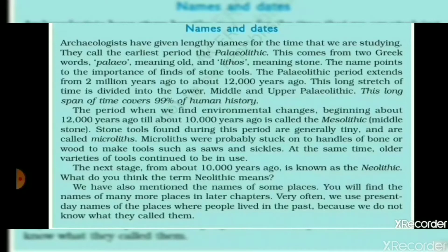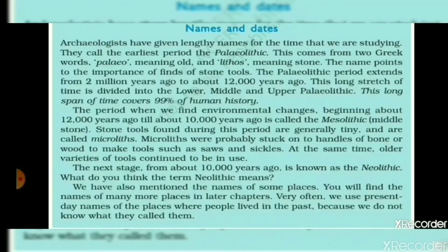So we have three periods: Paleolithic means old stone, and the middle one is Mesolithic, from 12,000 to 10,000 years ago. Stone tools found during the Mesolithic period are generally tiny and are called Microlithic.